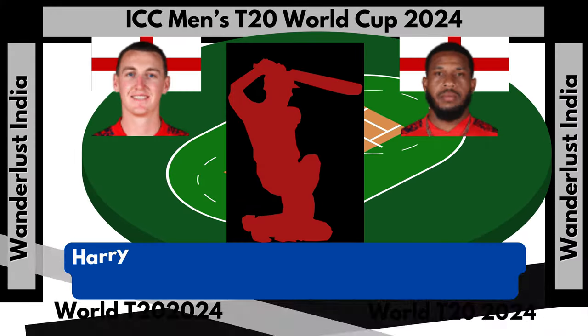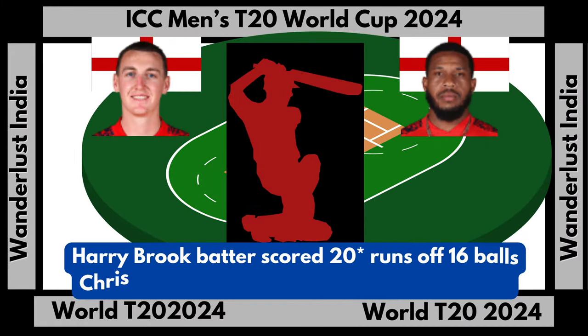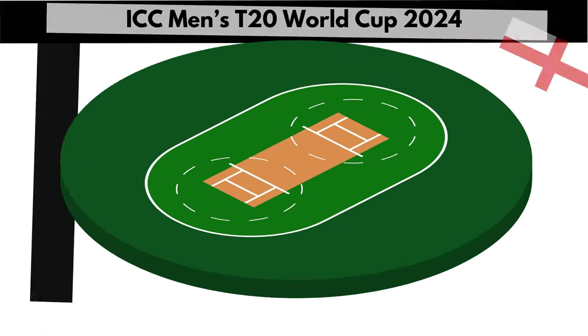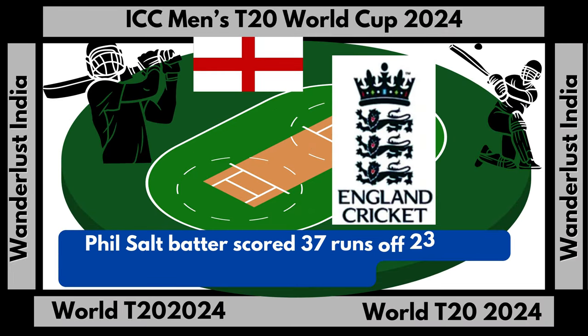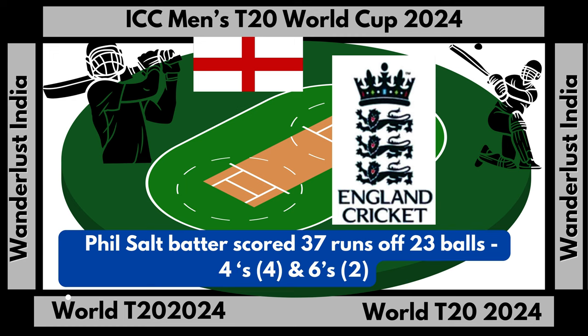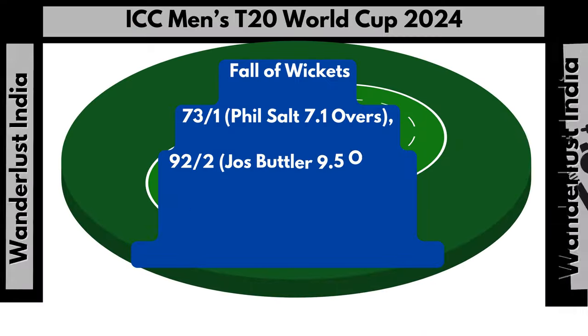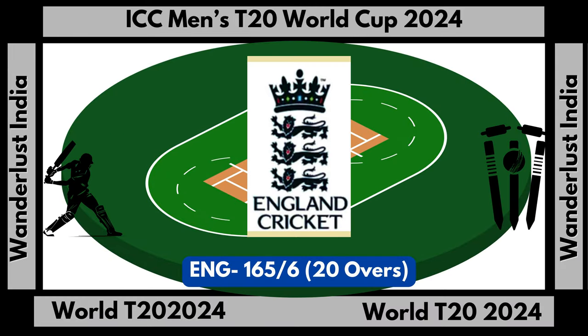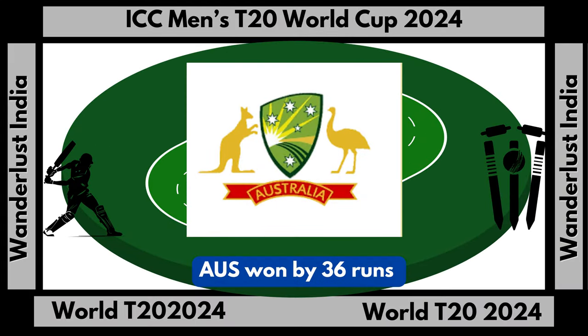Harry Brook batter scored 20 runs not out off 16 balls. Chris Jordan batter scored 1 run not out off 3 balls. Phil Salt scored 37 runs off 23 balls with 4 fours and 2 sixes. England fall of wickets: 165 runs off 6 wickets. England total score: 165 runs off 6 wickets in 20 overs. Australia won by 36 runs.